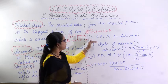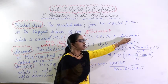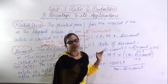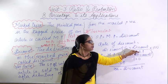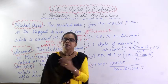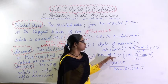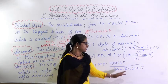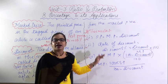Note down these formulas: Selling price equals mark price minus discount. Rate of discount: discount percent equals discount upon mark price into 100. Selling price equals mark price into (100 minus discount percent) upon 100. And mark price equals 100 into SP upon (100 minus discount). When you solve the exercise questions, you will go through these formulas and understand them.